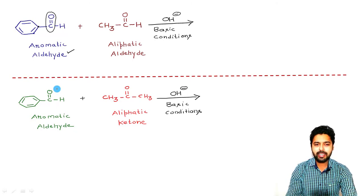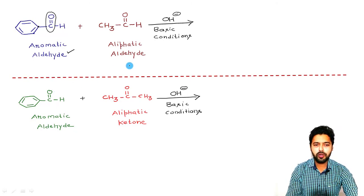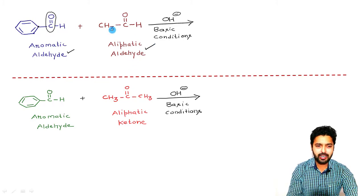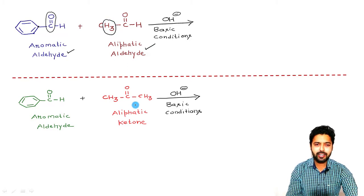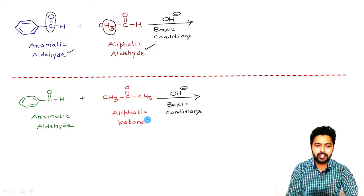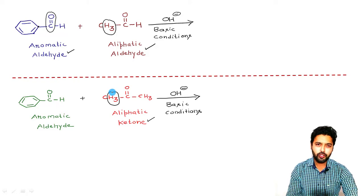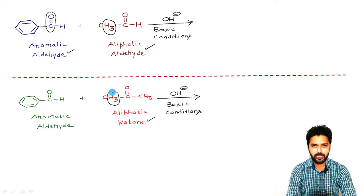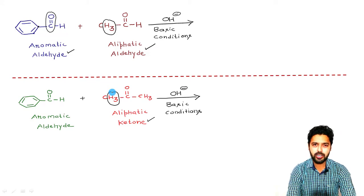If you look at the second reactant molecule, in this first reaction here, it contains an aliphatic aldehyde and this does contain three alpha hydrogen atoms. As far as this second reaction is concerned, which is using an aliphatic ketone molecule, it also contains three alpha hydrogen atoms. So in the Claisen-Schmidt reaction, out of two reactant molecules, one should be having alpha hydrogen atoms and the second one should not be having alpha hydrogen atoms.